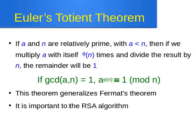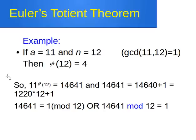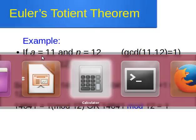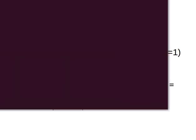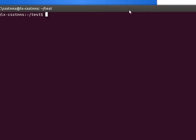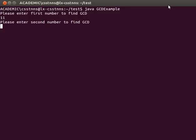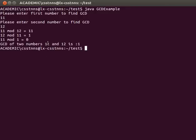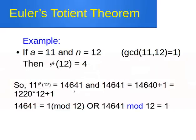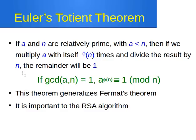Let's take another example: a = 11 and n = 12. These are co-prime — the GCD of 11 and 12 is 1, as we can verify. In previous videos I've shown a Java example of computing the GCD. So since GCD(11, 12) = 1, they are co-prime. Now phi of 12 is 4, which is the value we need to raise a to.